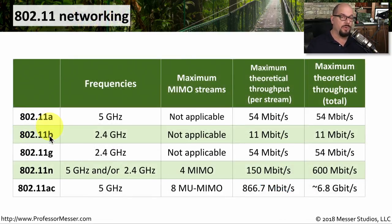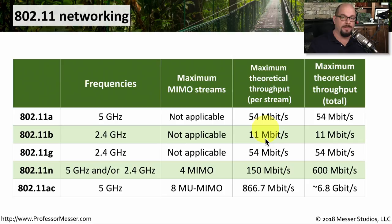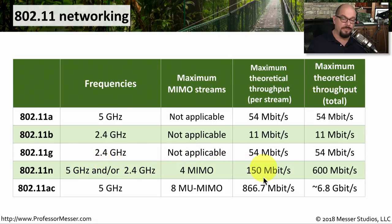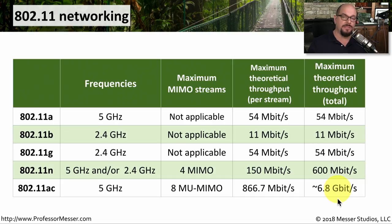Here's a summary of these five standards. 802.11a and b were released simultaneously: a supported 5 gigahertz and b supported 2.4 gigahertz, and neither supported MIMO. 802.11a provided 54 megabits of maximum theoretical throughput, and 802.11b supported 11 megabits. 802.11g was an update to 802.11b, using the same 2.4 gigahertz frequencies with speed increased to 54 megabits per second. 802.11n introduced MIMO with up to four streams at either 5 gigahertz or 2.4 gigahertz, supporting a theoretical maximum of 600 megabits per second. And 802.11ac, running in the 5 gigahertz range with eight multi-user MIMO streams, can support almost 7 gigabits of throughput.